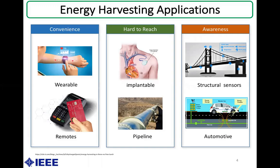There are multiple applications for energy harvesting. It can be used in wearable or remote devices where batteries are not applicable. Also, implantable devices or long-range structures such as pipelines — in these cases, energy harvesting can be used as a power supply for operation. In addition, sensors such as structural sensors and automotive sensors can use energy harvesting techniques for self-power without an external power supply.